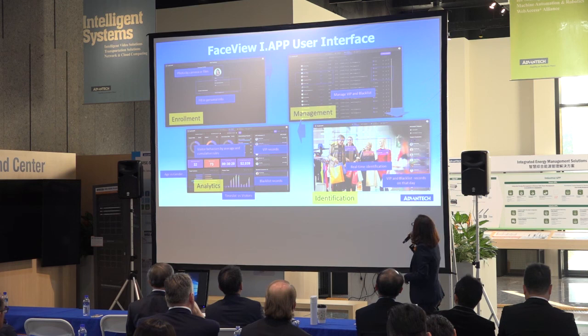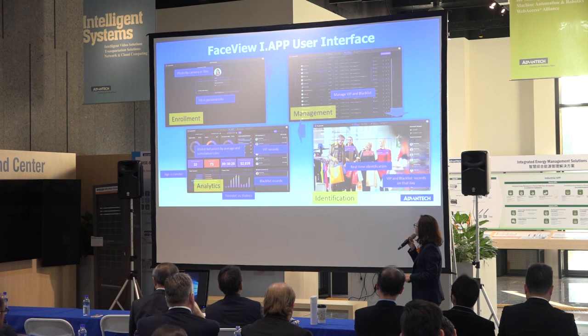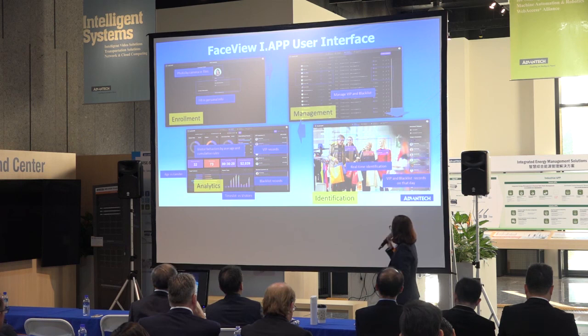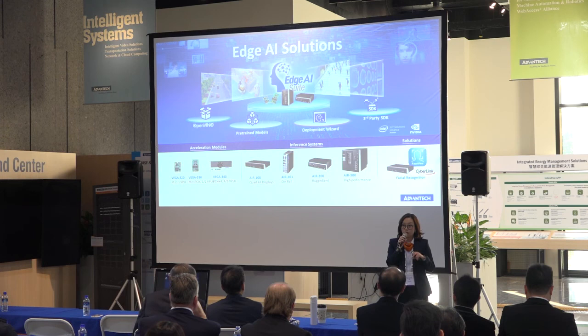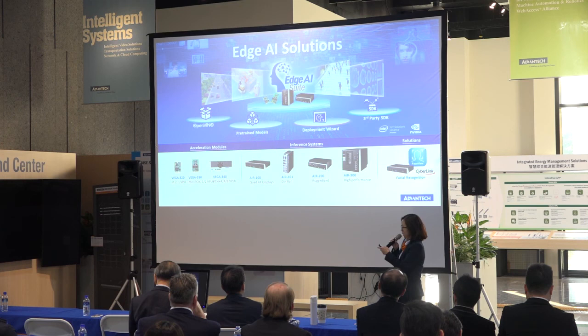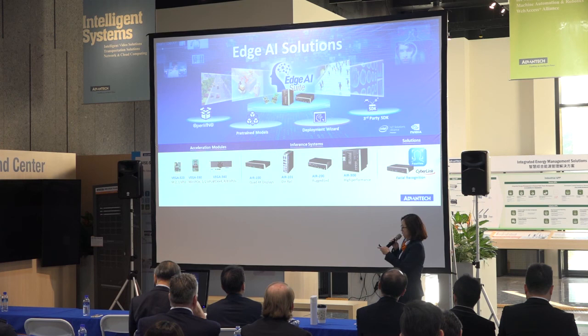A short introduction about the user interface: we have a dashboard visualizing visitor behavior and records for VIPs. You can manage blacklist records. And here's the management interface. That's all about FaceApp. So this is a short recap of the Edge AI solution — what we focus on right now is to enable the edge application, to enable AI on the edge with our acceleration modules, our integrated systems, and also our software solution. That's all for my presentation. Thank you.